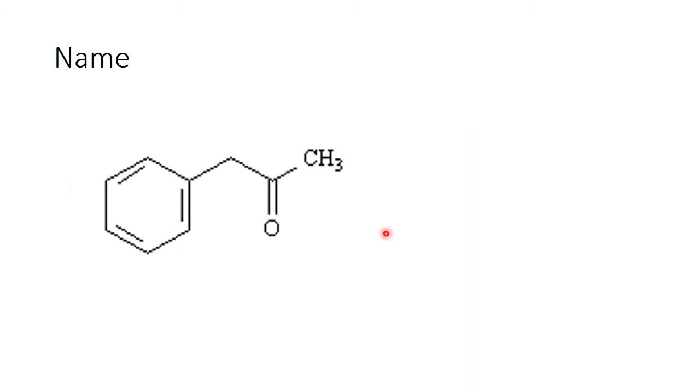Name this compound. The primary chain here is not the benzene ring. It is 1, 2, 3. That's acetone or propanone. And you have a phenyl on there. So this is the phenyl is going to be a substituent. So what are we going to call it? We're going to call it 1-phenyl-2-propanone.